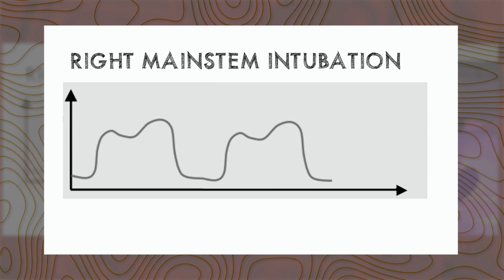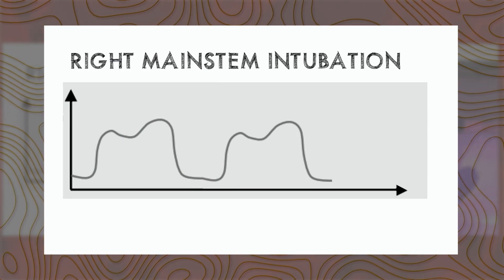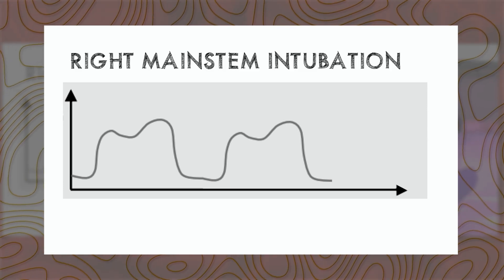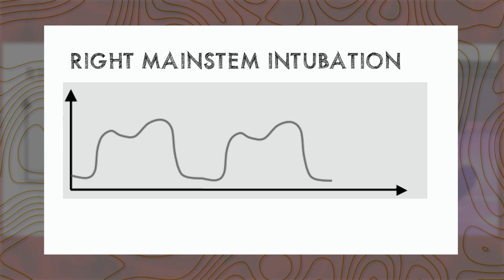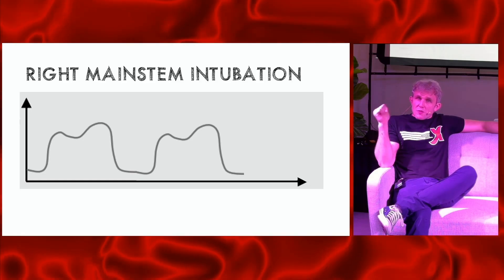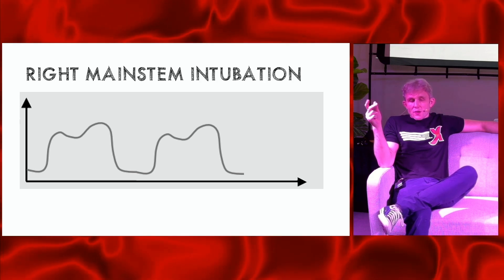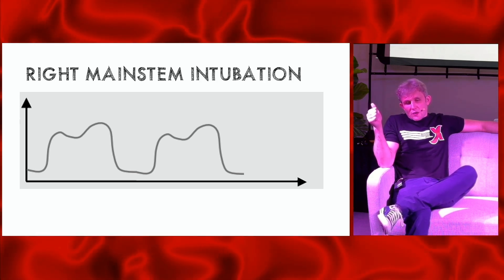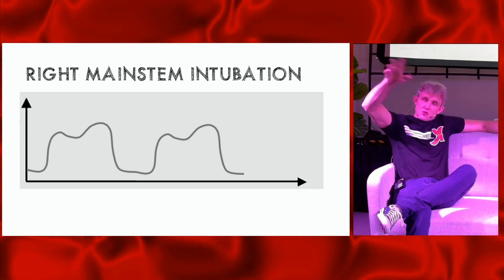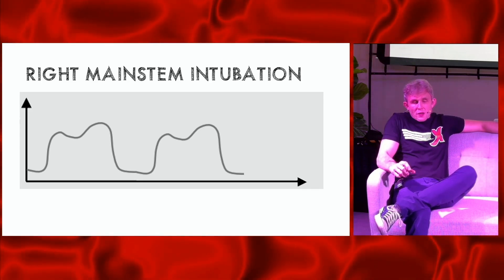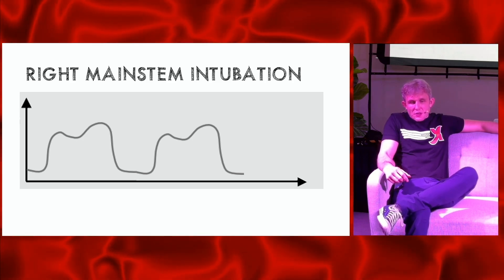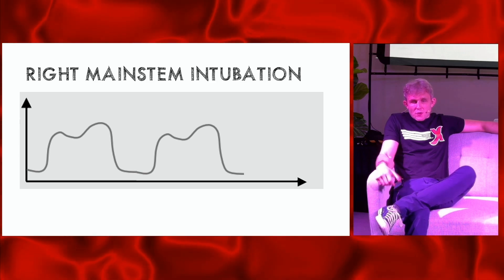Right mainstem intubation produces a distinctive waveform: instead of a straight peak at the top, you see an initial slope followed by a second higher delayed slope. By right mainstamming, you've created an immediate VQ mismatch — lower end-tidal — which then self-corrects as gas recirculates from the left lung back up through the tube. You eventually reach the same end-tidal, but this cleft pattern is something you can actually call off the waveform if you're paying attention.